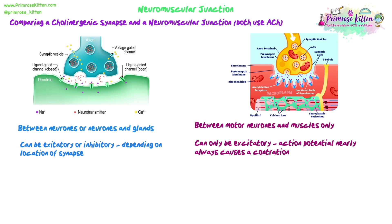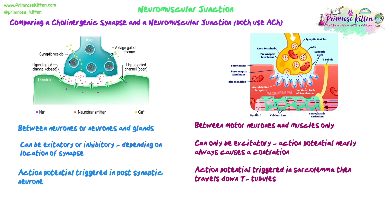In a cholinergic synapse, the action potential is triggered in the post-synaptic neuron to pass along the signal. In the neuromuscular junction, the action potential — or wave of depolarization — is triggered in the sarcolemma and travels down the T-tubules. We're not trying to trigger an action potential to pass on a signal; we're causing it to lead to contraction of the muscle.